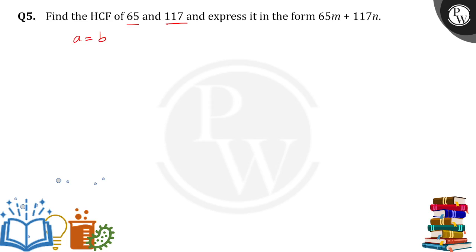So A is equal to BQ plus R. A means 117 is equal to 65Q. Q is nothing but it will cancel only one time. Then 65 into 1, you will get a remainder as 52.